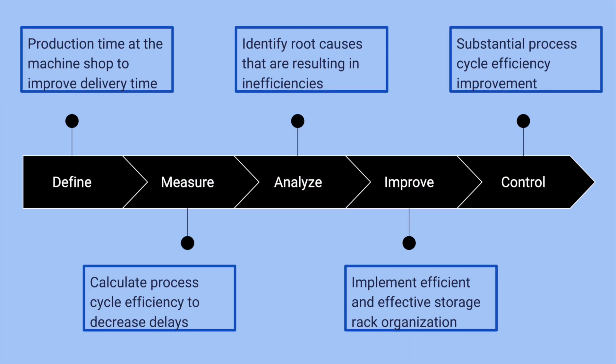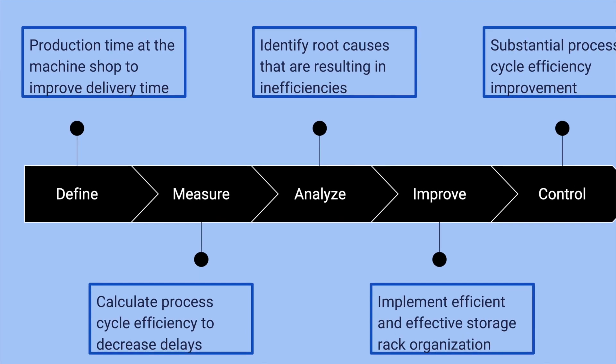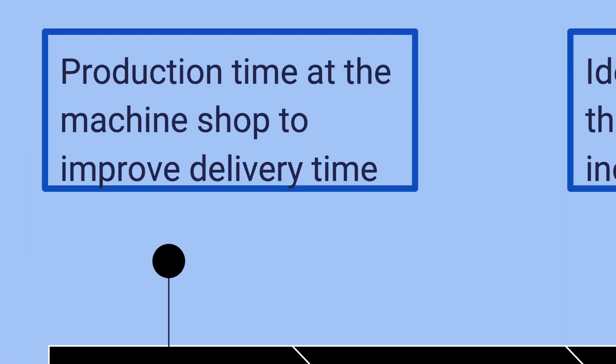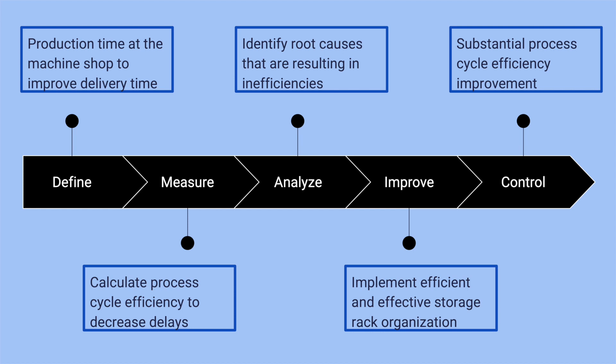To implement Lean Six Sigma, the organization must implement DMAIC processes. The organization's first order of business is to define project objectives and customer needs. The project team worked to identify the customer voice through individual interviews with customers, through which they were able to determine that customers were dissatisfied with product delivery time. Technicians indicated that components in the shop are difficult to locate, causing an increase in production time and consequently in delivery time.